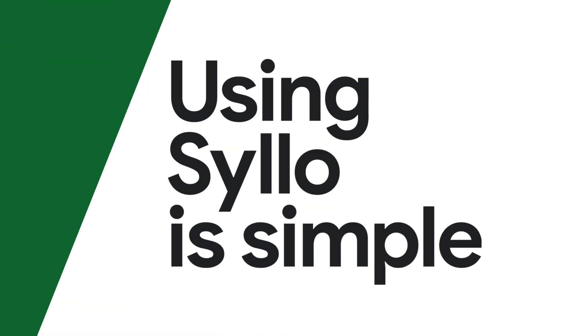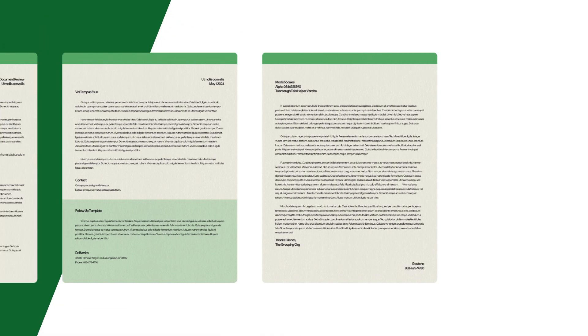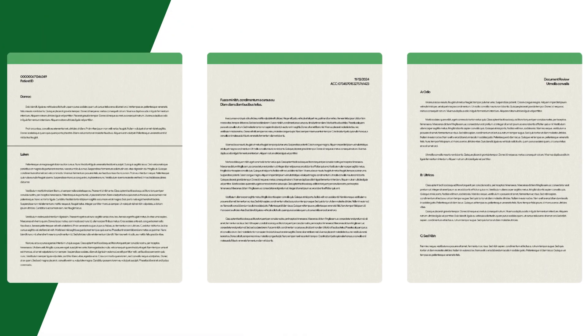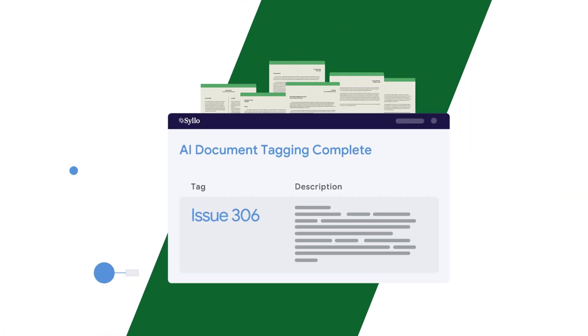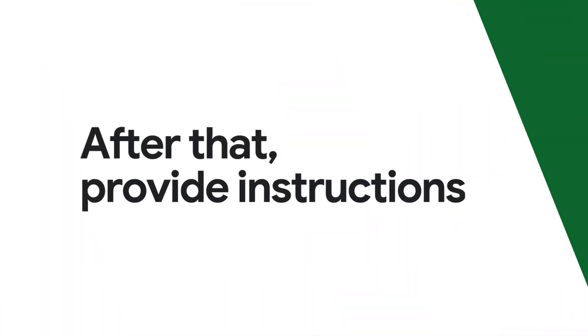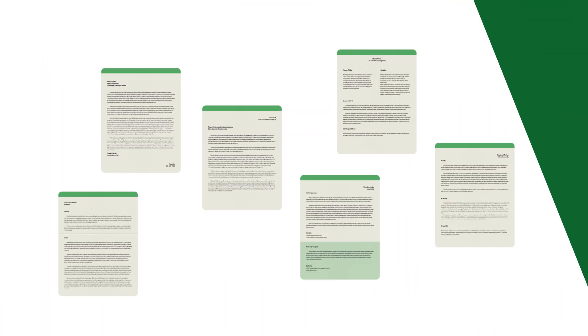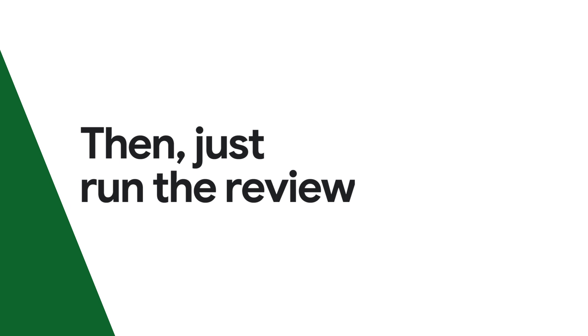Using CILO is simple. First, select the documents you want to review. Next, define the tags for each issue. After that, provide instructions to help the AI determine which documents are most relevant. Then just run the review — CILO will tag each document based on its relevance to a particular issue.